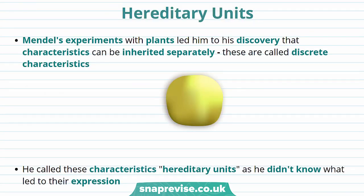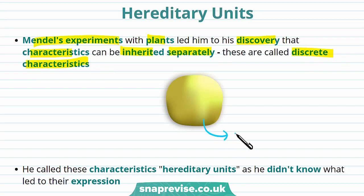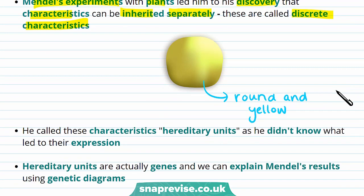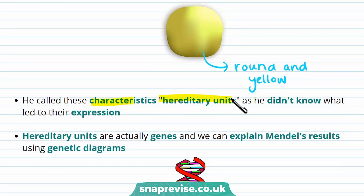First let's talk about hereditary units. Mendel's experiments with plants such as pea plants led him to the discovery that characteristics can be inherited separately — these are called discrete characteristics. For example, a pea plant can be round and yellow and these characteristics can be inherited separately. He also found that when you cross green and yellow pea plants the offspring aren't a mixture of the colours — they're either green or yellow. So Mendel called these characteristics hereditary units.